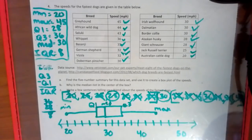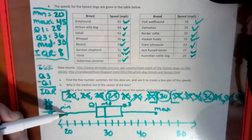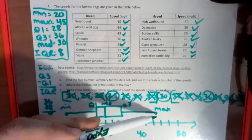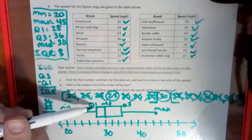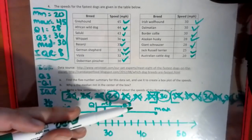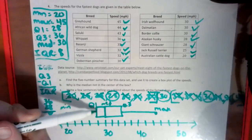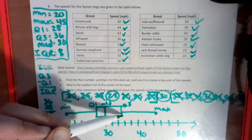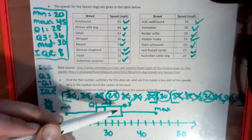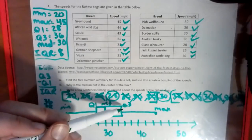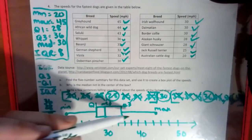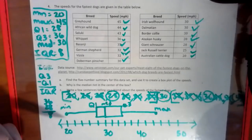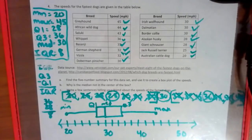That is how you make a box and whisker plot. So one more time: min gets a dot, max gets a dot. The bars are the Q1, the median, and the Q3. Connect those to make the box, connect the dots to the box, and that is your box and whisker plot. Rewatch that if you have any questions. Have a good night.